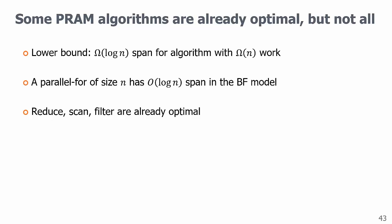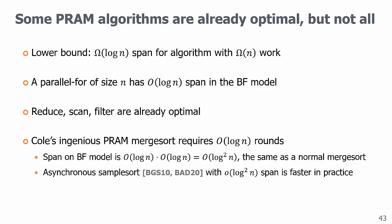Some existing algorithms are already optimal in the binary forking model for simple problems like reduce scan filter, but not even for sorting. For example, Cole's ingenious PRAM merge sort runs in rounds and requires log n rounds, so the span in the binary forking model is order of log squared n, the same as the normal merge sort. That's probably why in practice, we usually use the faster asynchronous sample sort that has lower span on the binary forking model.